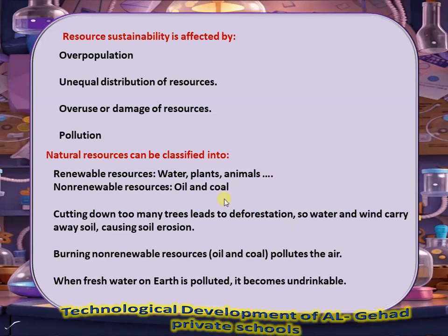Natural resources can be classified into renewable resources like water, plants, and animals, and non-renewable resources like oil and coal. Cutting down too many trees leads to deforestation, so water and wind carry away soil causing soil erosion. Burning non-renewable resources like oil or coal pollutes the air.